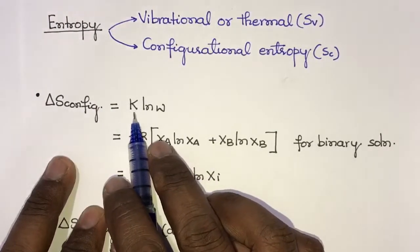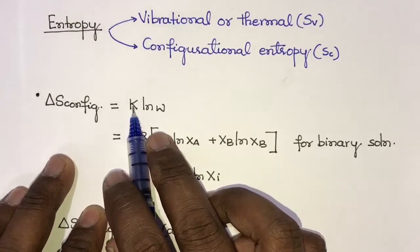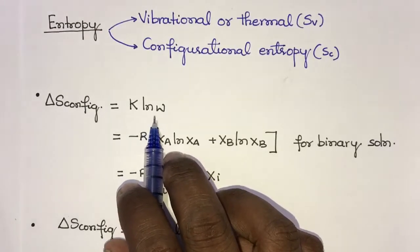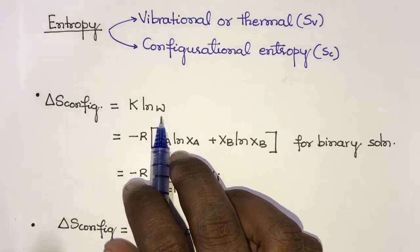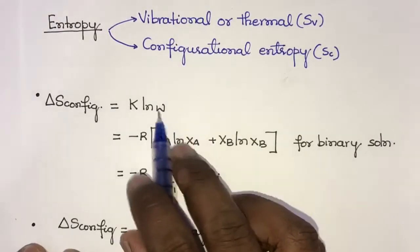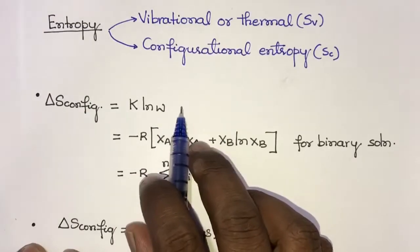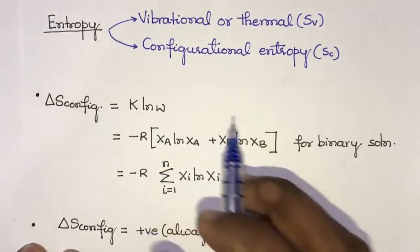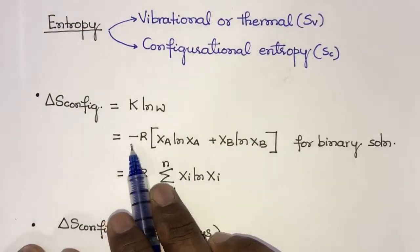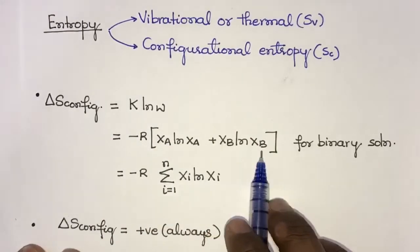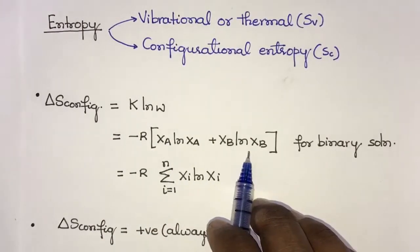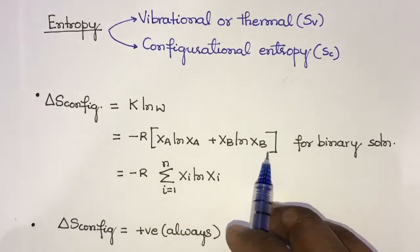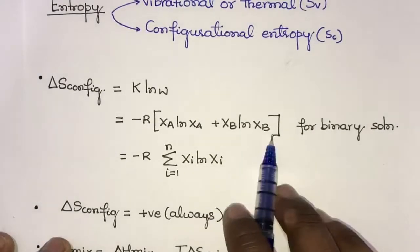Configurational entropy is given by S = kln(W), where k is the Boltzmann constant and W is the number of ways in which the atoms can be arranged. For a binary solution, the number of ways of arranging atoms of A and B, upon expansion, gives: ΔS = −R(xA·ln xA + xB·ln xB), where xA and xB are the mole fractions of components A and B. This is for a binary solution.